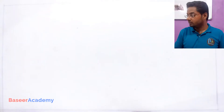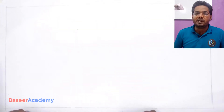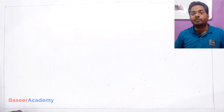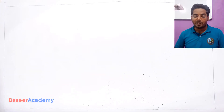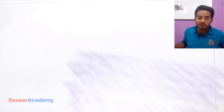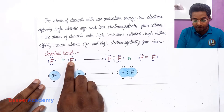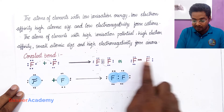By now you must be aware that an ionic bond is formed by transfer of electrons from one atom to another, whereas a covalent bond is formed by sharing of electrons between atoms. Let us see the formation of the fluorine molecule.